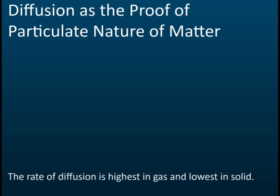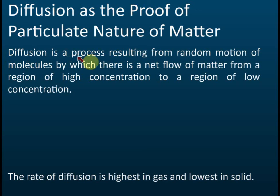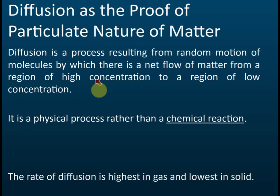Diffusion in solid, liquid, and gas. What is diffusion? Diffusion is a process resulting from random motion of molecules by which there is a net flow of matter from regions of high concentration to regions of low concentration. You need to memorize these definitions. In the exam, they will ask you what is the definition for diffusion. Diffusion is a physical process, not a chemical process. It is not a chemical reaction.